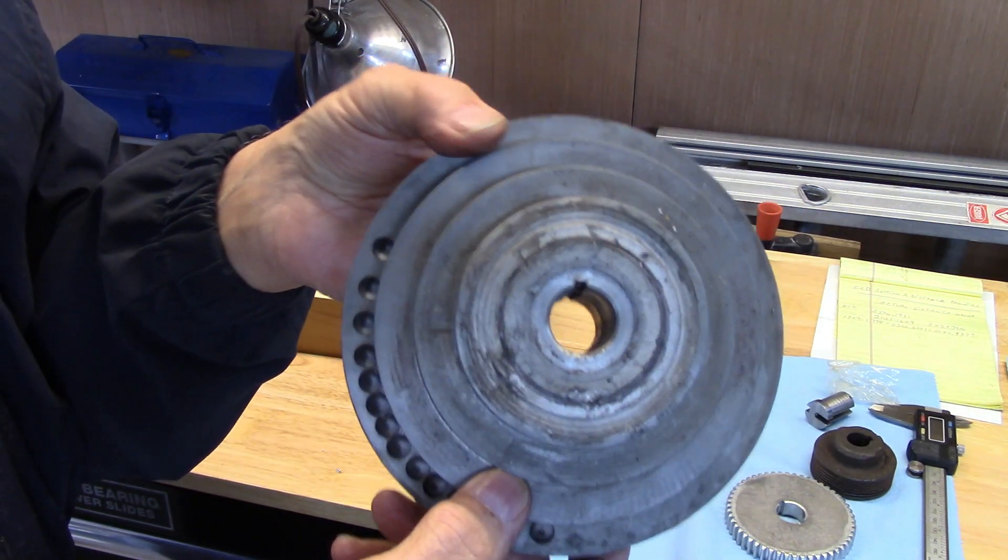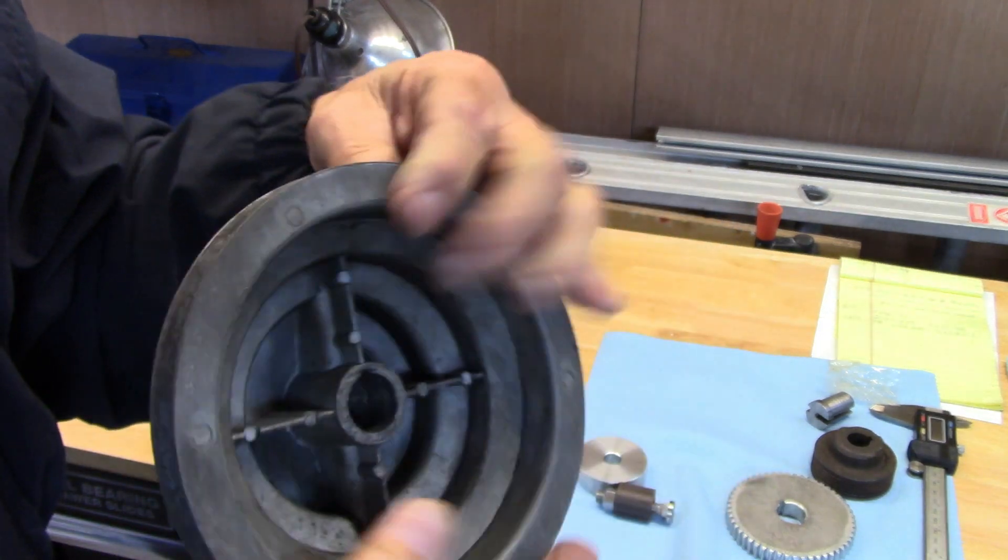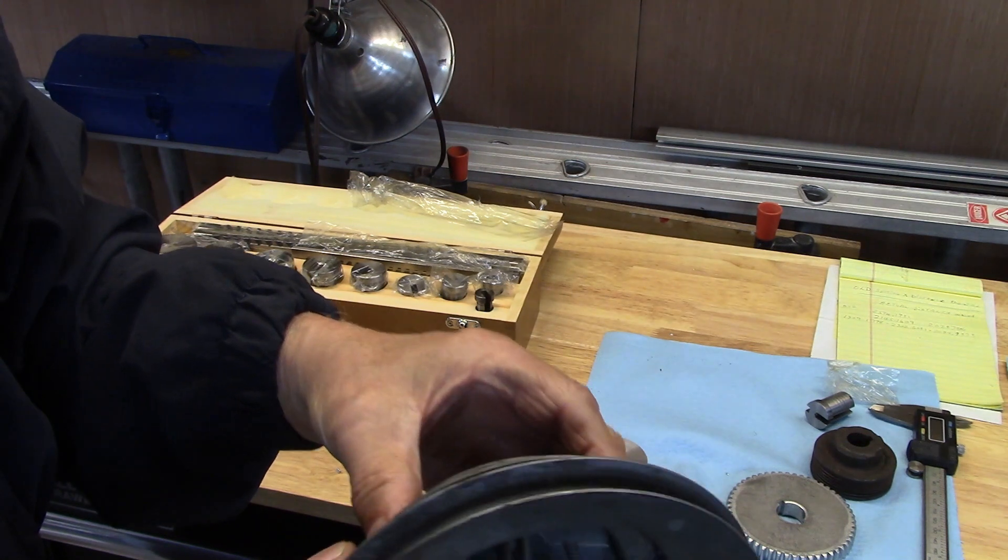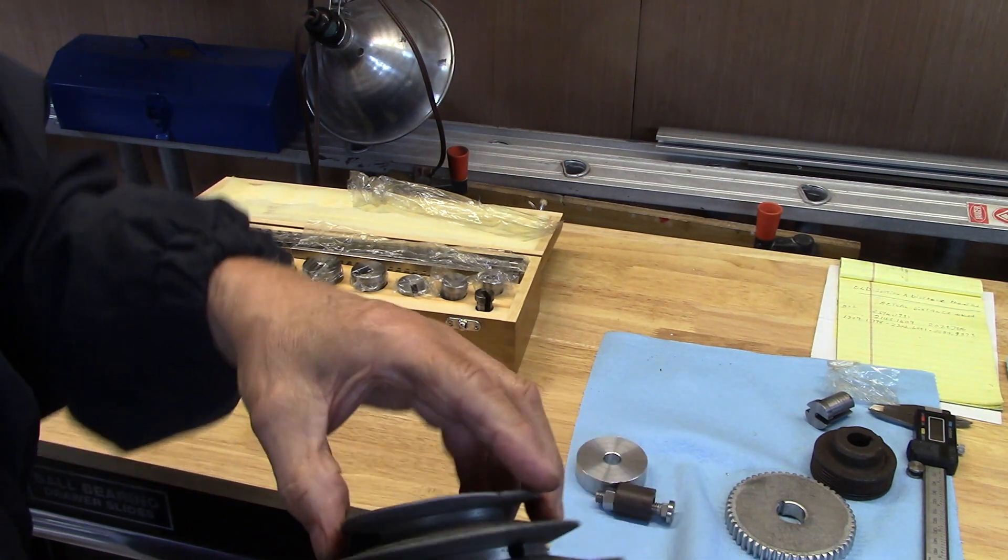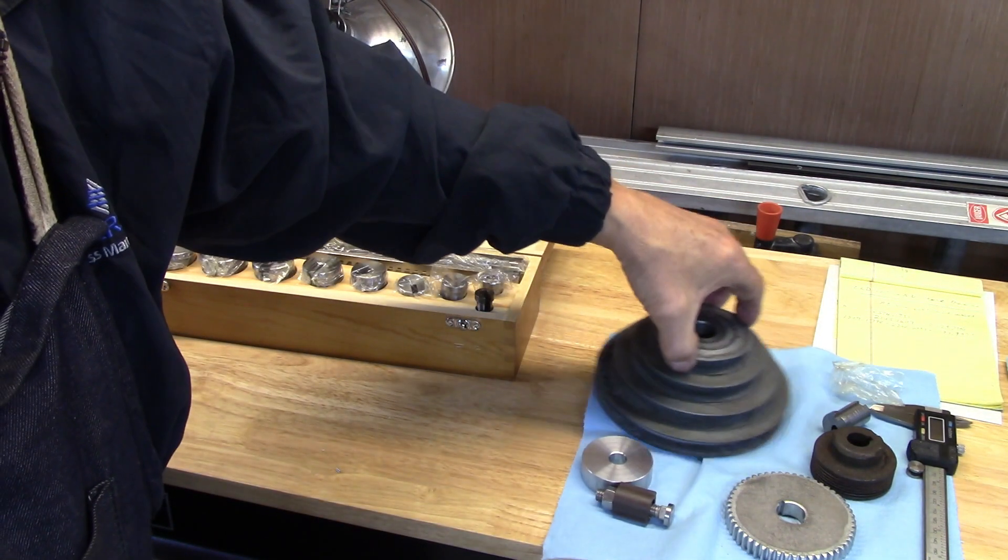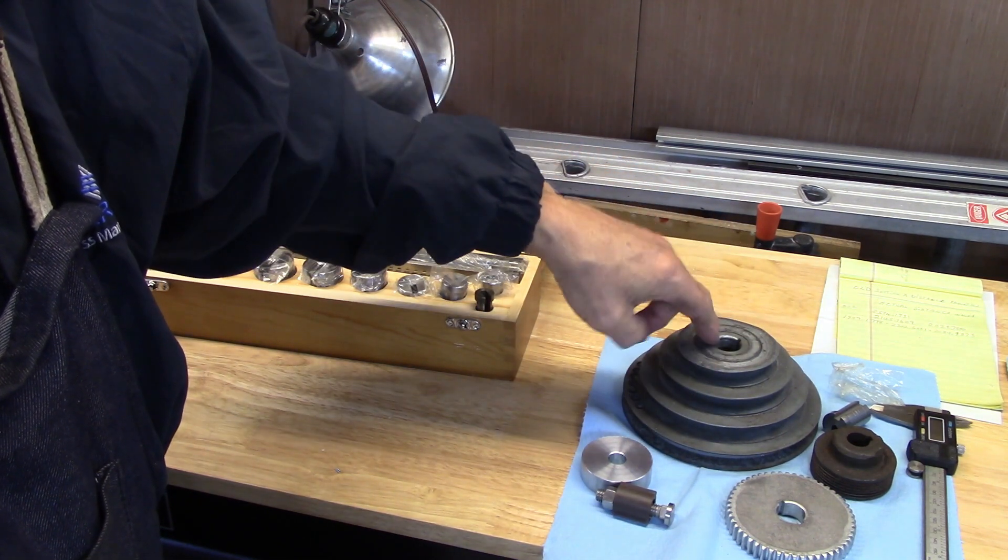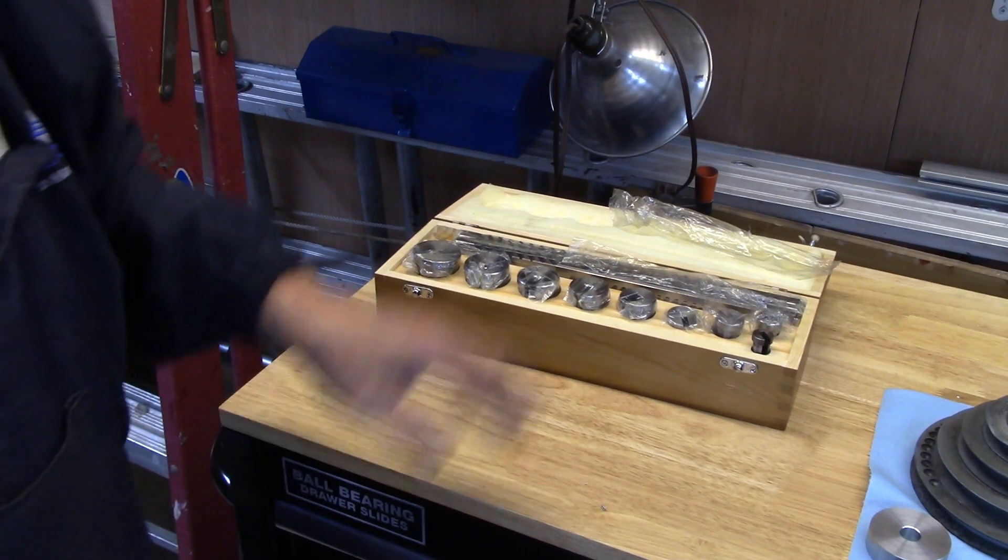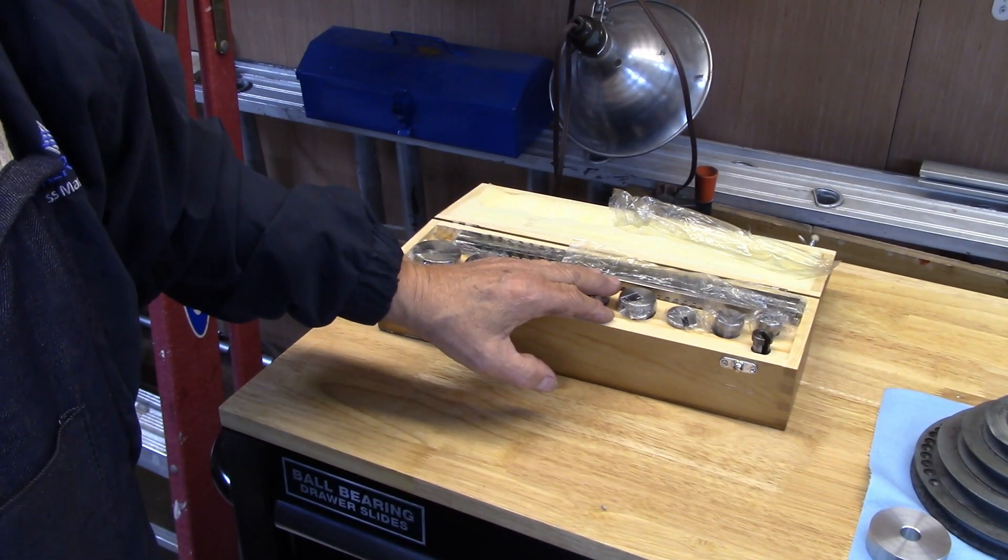Here's another pulley. You can see it's got the keyway in it. Maybe it's better seen from behind. This looks a lot like a Craftsman lathe pulley. I had to buy a new one because something got messed up with it.